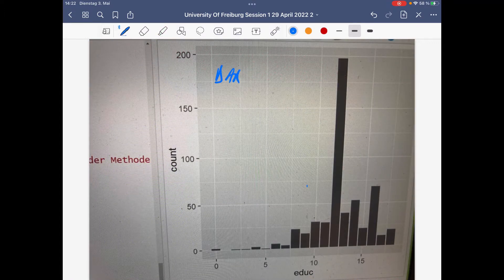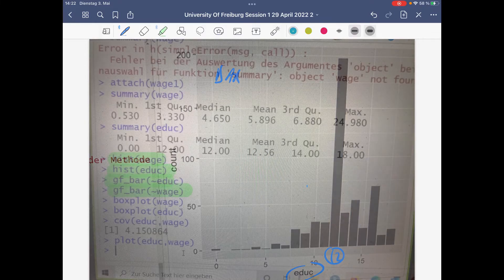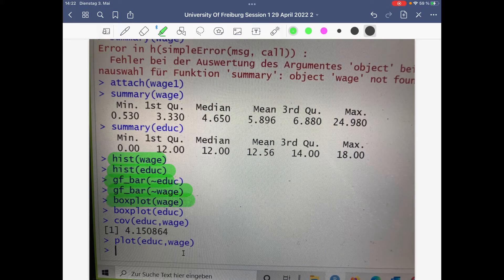This here is a bar diagram for the discrete numeric variable education. Typically use these bar diagrams for categorical variables, but here it makes also sense just to see that 12 years of schooling is here pretty often observed.